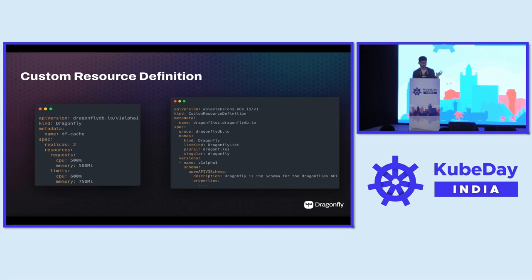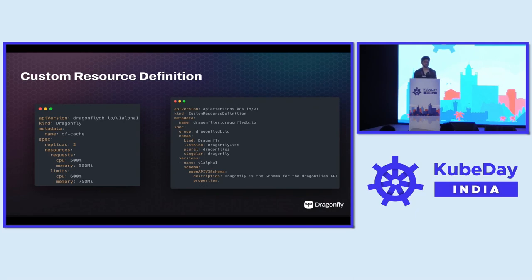On the left is the custom resource called Dragonfly, and on the right is the custom resource definition — the definition of the Dragonfly type. Essentially, you're telling Kubernetes there's a new resource called Dragonfly that it should be aware of from now on, with all these fields. The plural form is called Dragonflies, and we also pass the OpenAPI V3 schema here, used to validate objects. Whenever a user applies a resource of type Dragonfly, we validate against the OpenAPI schema.